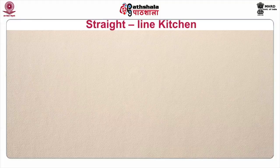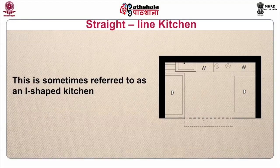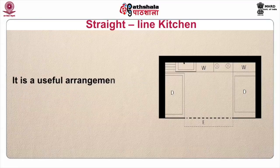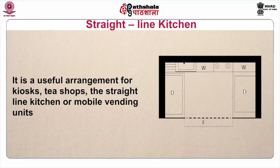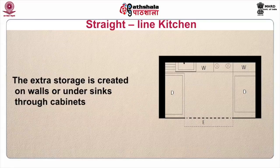The straight line kitchen is sometimes referred to as an eye-shaped kitchen. It is a useful arrangement for kiosks, tea shops and mobile vending units. Extra storage is created on the walls or under sinks through cabinets. For service, there is a provision for a platform or extended counter outside a window. Window spaces can be shelved and covered with wire mesh shutters to increase display space and protect from flies, while providing enough ventilation in small spaces.